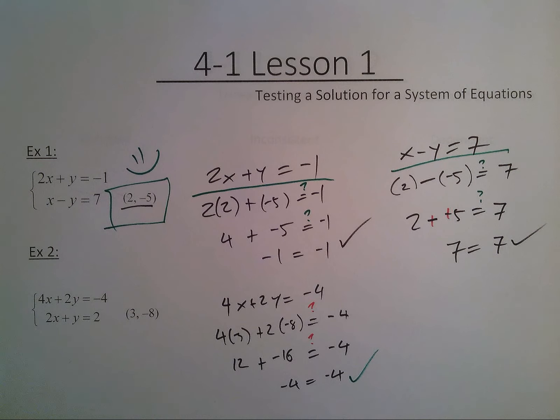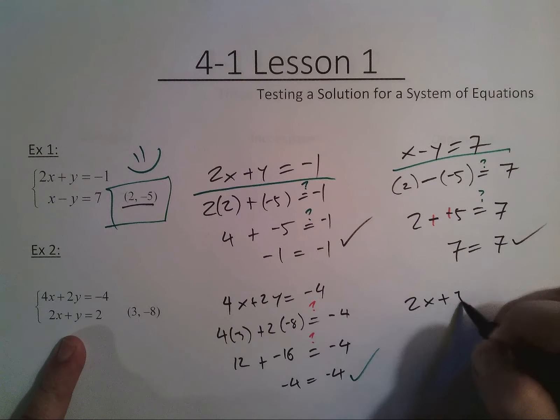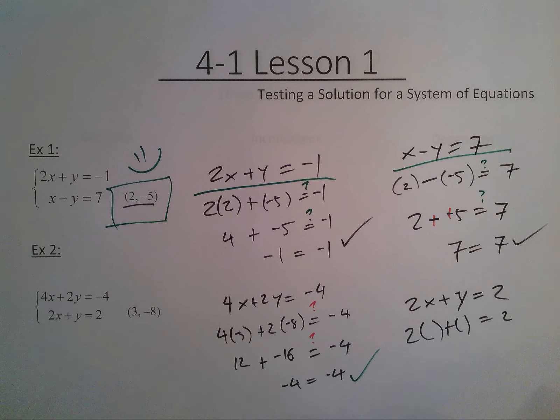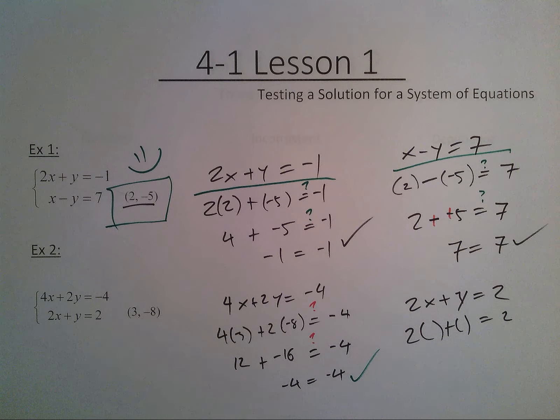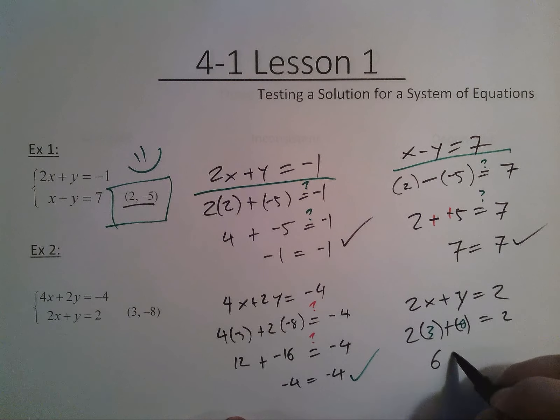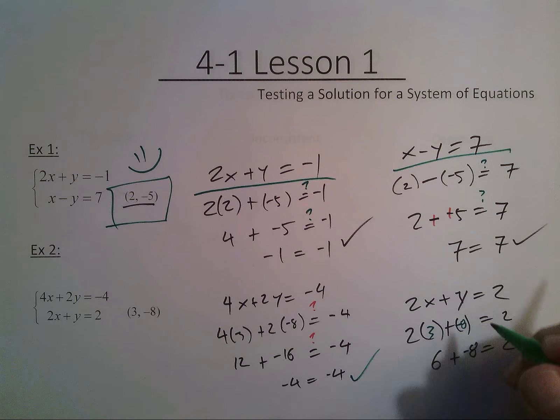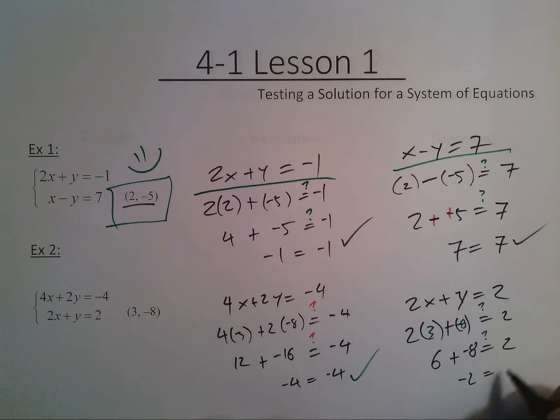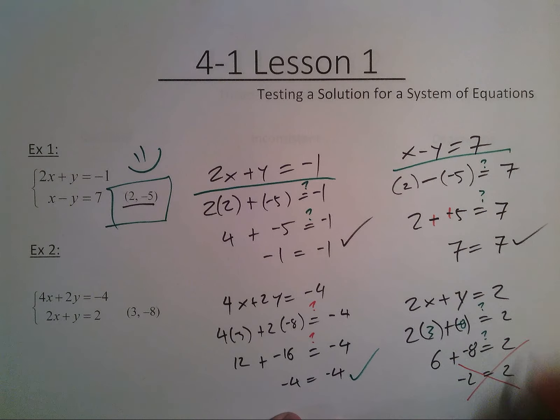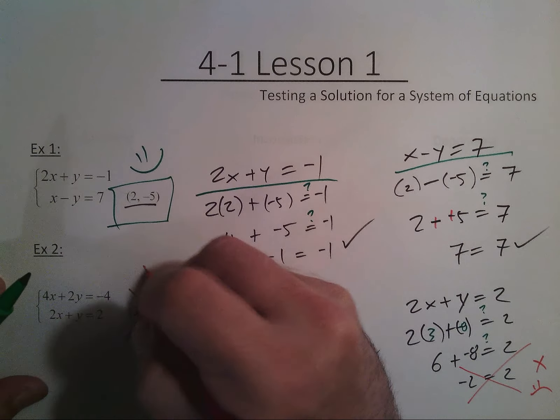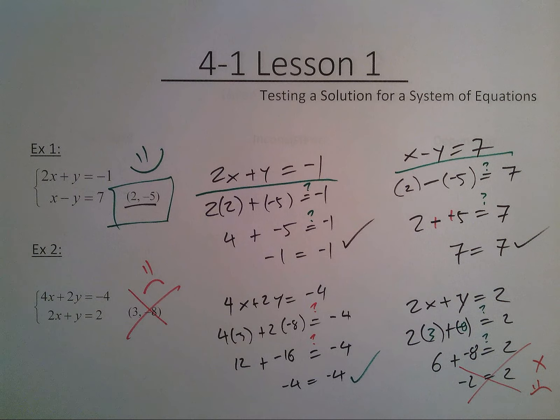Let's see if it works in the second equation. So my second equation, 2x plus y equals 2. We're going to replace the x, we're going to replace the y with 3 and negative 8 respectfully. And test it out. So let's see, 2 times 3 is 6 and we're going to add negative 8 to that. And again, we're not sure if this equals. Let's see, 6 plus negative 8 is negative 2. And no, it does not equal.